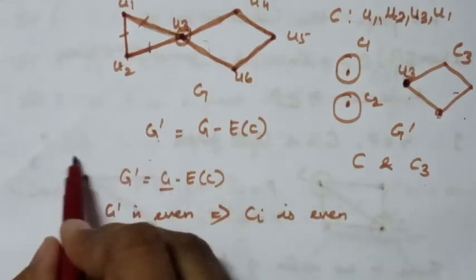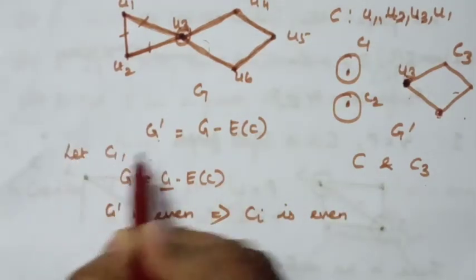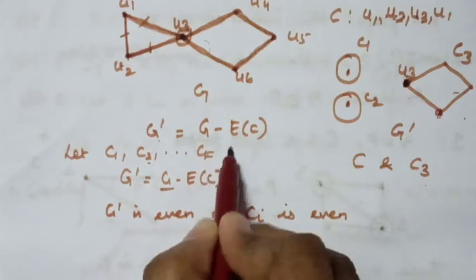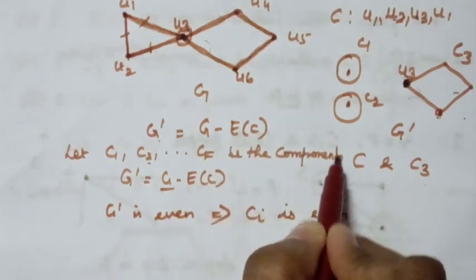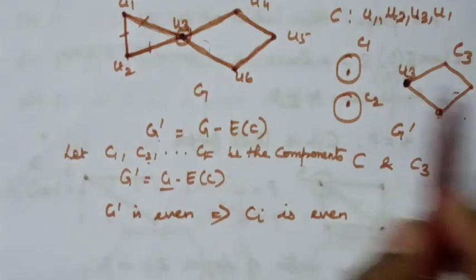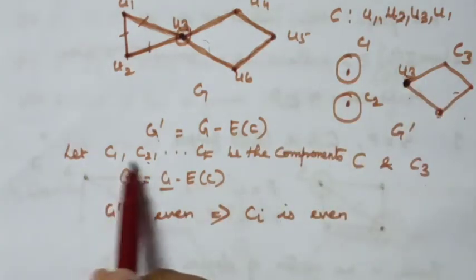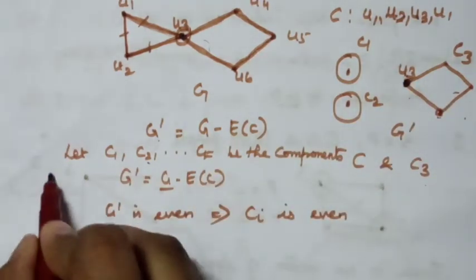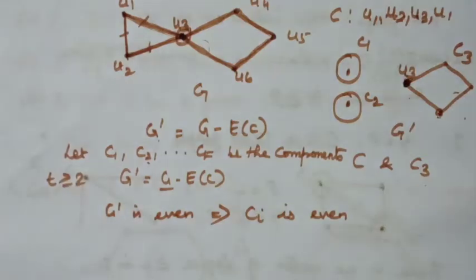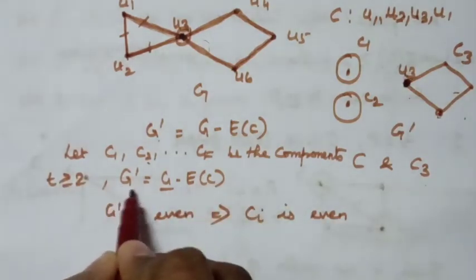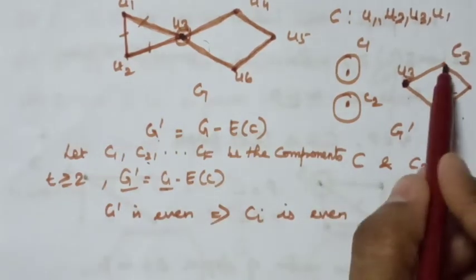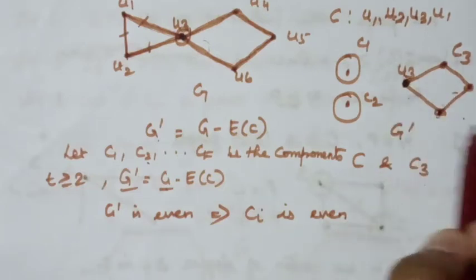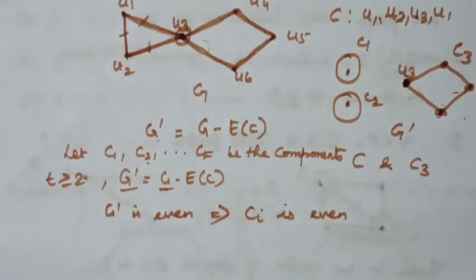We are talking about the general graph. In the example graph there are 3 components; in general you get T components, where T may be greater than or equal to 2. Since G' is even, every component is also even — that is, every vertex in every component has even degree.